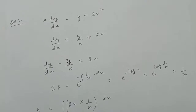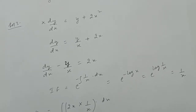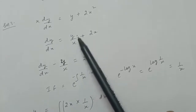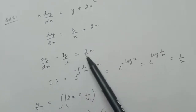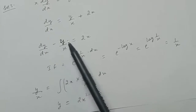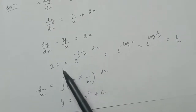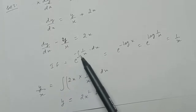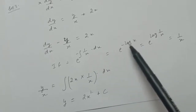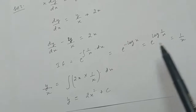Question three: solve the differential equation x dy/dx equal to y plus 2x squared. Divide both terms by x to make the coefficient of dy/dx equal to 1, then rearrange to get dy/dx minus y/x equal to 2x. This is of the type dy/dx plus Py equal to Q, where Q is 2x and P is minus 1/x. The integrating factor is e to the power of the integral of minus 1/x dx, and since the integral of 1/x is log x, minus log x equals log(1/x), so the integrating factor is 1/x.